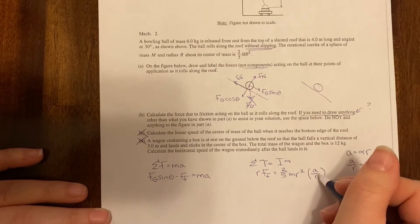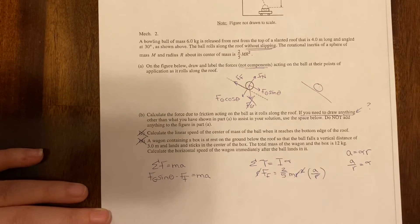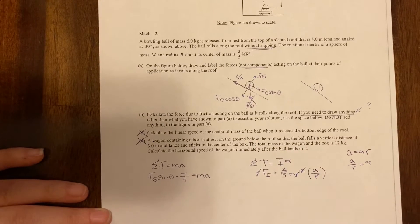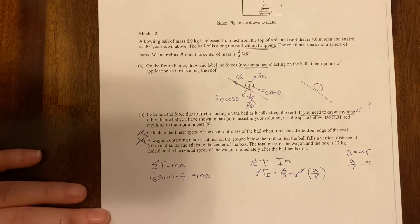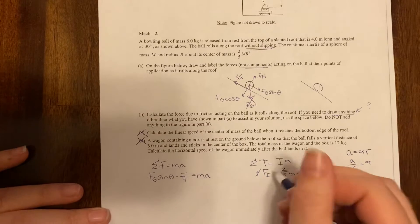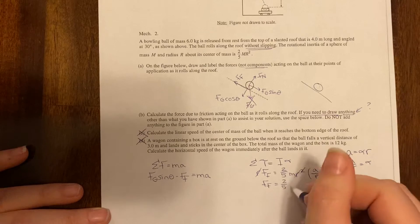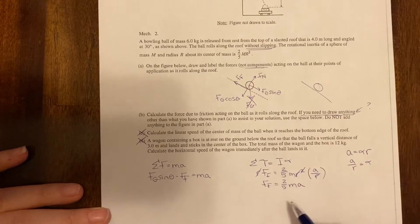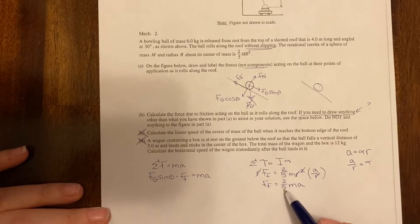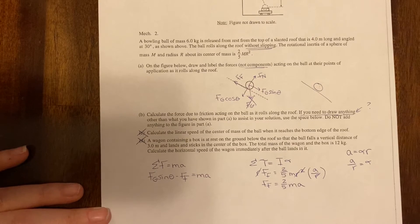Okay so then I'm going to cross out all of the radiuses here. All right so we have that Ff is equal to two-fifths MA and you should be happy like okay I did this correctly because I'm always going to get two-fifths times MA.